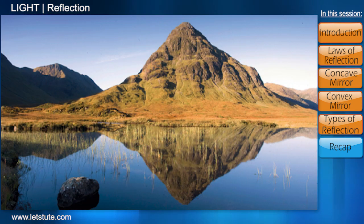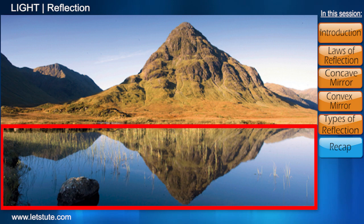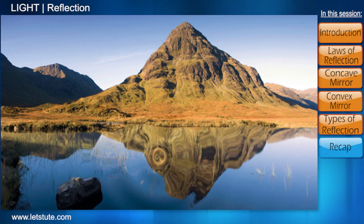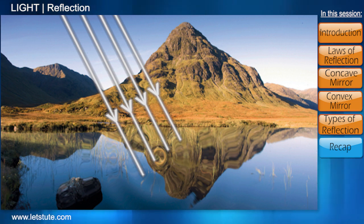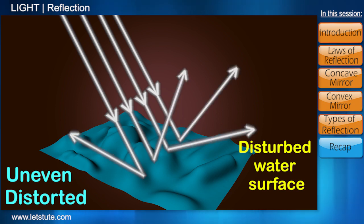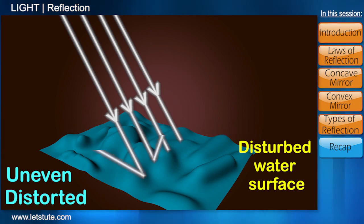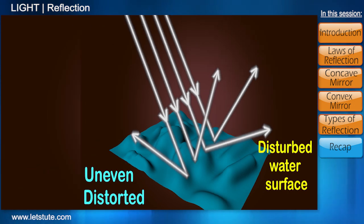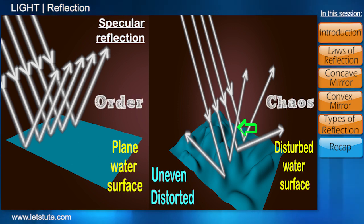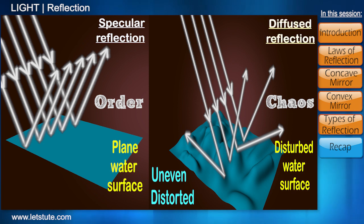Let's understand this using the example of water. When the surface of the water is still, it is somewhat smooth and the type of reflection that occurs is specular reflection. So why is it that when the water is disturbed, we do not get the same quality of reflection? Let's consider the same parallel beam of light falling on a rough surface this time, like the disturbed water surface. As the surface of the water is now uneven and distorted, the light rays no longer remain parallel after reflection and are in fact spread across in different directions — there is total chaos of reflected rays. This type of reflection is called diffused reflection.